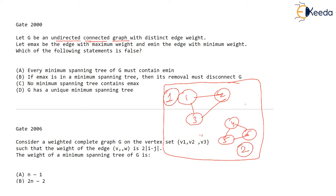But what if I show some edge from two to four? Now this graph has a single component. Previously it had two different components, but now it has only one component — it is a connected graph, because you can go from any vertex to any other vertex in this graph.